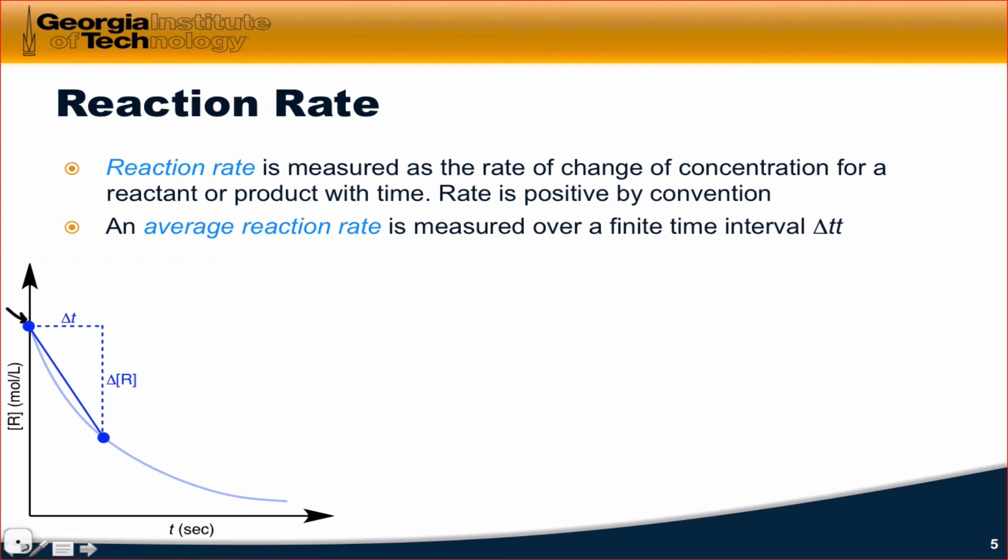For example, we measure the concentration at one time, T0, let's say. Then we measure the concentration again at another time, T1. Delta T is the difference between T1 and T0. And we can measure a change in reactant concentration, delta R. The slope of the line connecting those two points is an approximation of the instantaneous rate. And we call that the average reaction rate. It's equal to negative delta R divided by delta T. And the negative sign comes in since the rate is positive by convention. And the reactant is disappearing. So delta R is less than zero. Since we want the rate to be positive by convention, we use this negative sign.